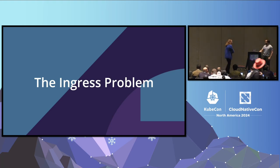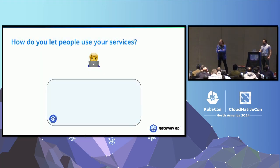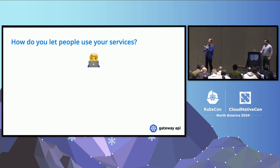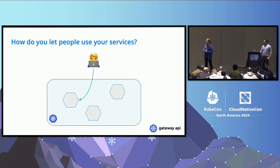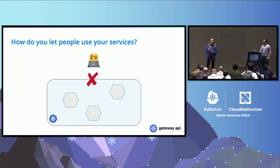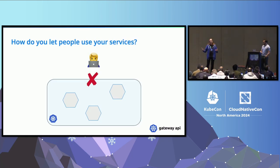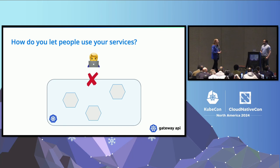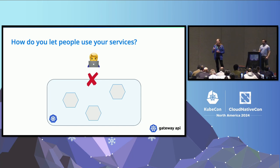The ingress problem is the thing that Gateway API was originally intended to solve. If you have a user and you have a cluster with things running inside, the user is going to want to use those things — and this is something clusters are intentionally going to prevent. We need something to sit in between the user and the workloads, mediating access from outside to inside safely. It's an important problem because it's the first problem everybody developing in cloud native runs into.